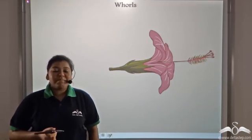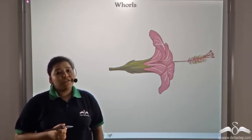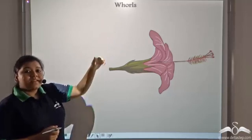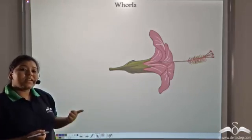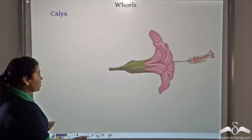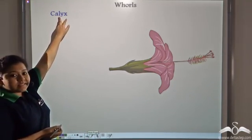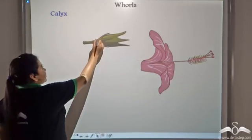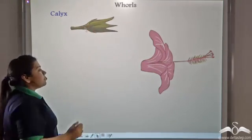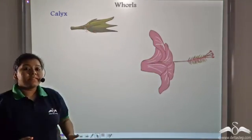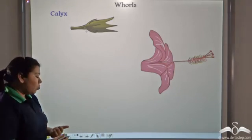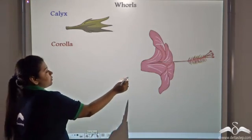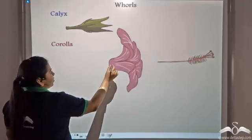The different parts of a flower are known as whorls. The first outermost whorl is known as the calyx. This is the calyx. The second whorl is known as the corolla. This is the corolla.